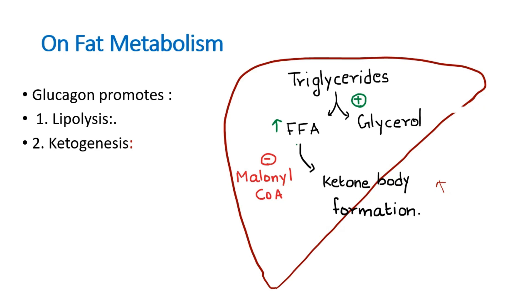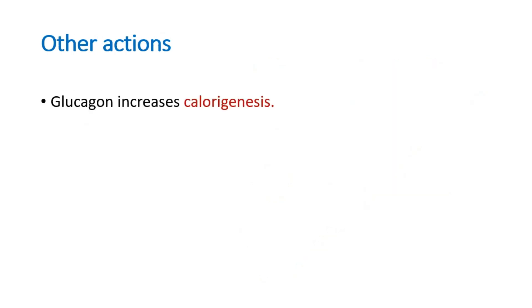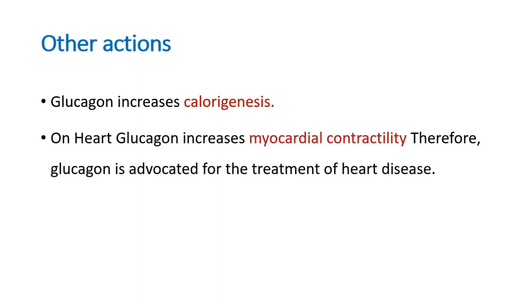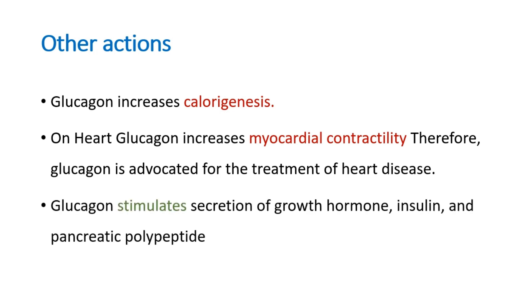Those are the two effects of glucagon on fat metabolism: lipolysis and ketogenesis. Some other actions include: glucagon increases calorigenesis, and on the heart glucagon increases myocardial contractility — therefore glucagon is used in the treatment of certain heart conditions. It also stimulates secretion of growth hormone, insulin, and pancreatic polypeptide.